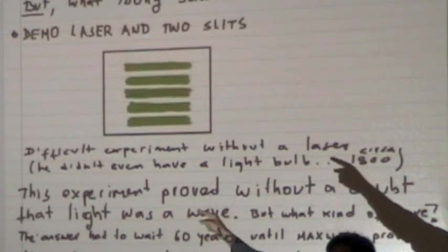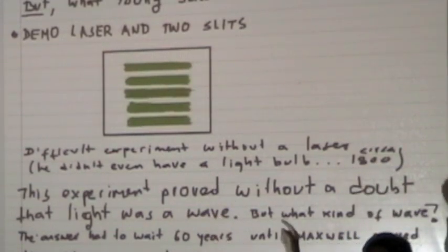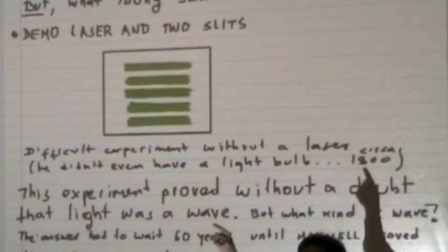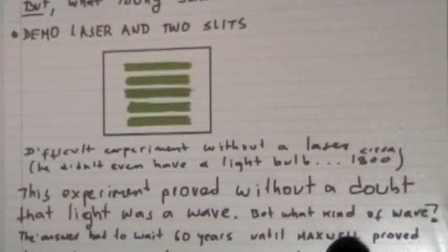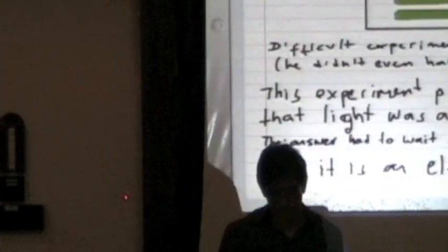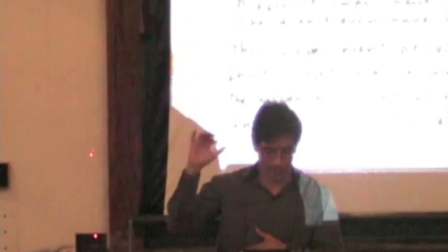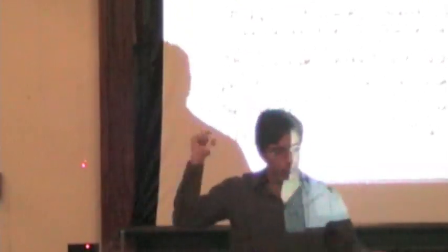Those waves, to arrive at a particular point on the screen, travel different distances. Because of that, they arrive at that point with a different phase. And if two waves have different phases and they're overlapping — they're trying to be at the same place at the same time — they will interfere with each other. You can have points where they cancel out completely, and points where they interfere constructively, and so on.